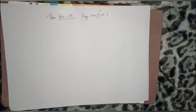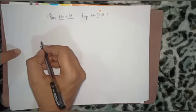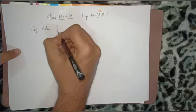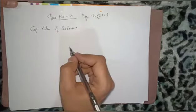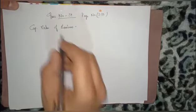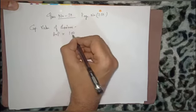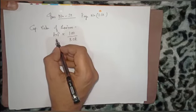Now we will start solving the question. Since question number 34 is based on capitalization of average profit, the formula for the capitalized value of the business is: Average Profit × 100 ÷ Rate of Return.